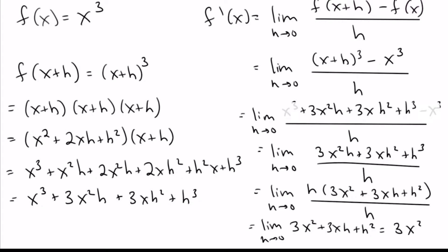Now we can just plug in h equals 0, and the only term left is 3x squared. So our final answer is f prime of x equals 3x squared. Let's jump on to the next problem.